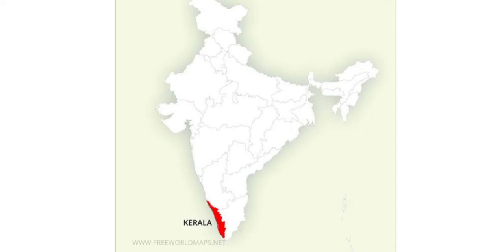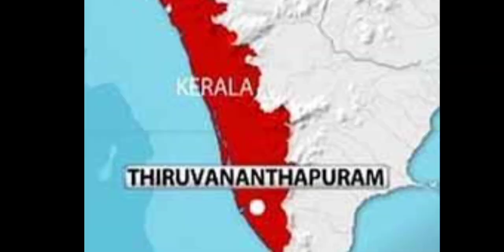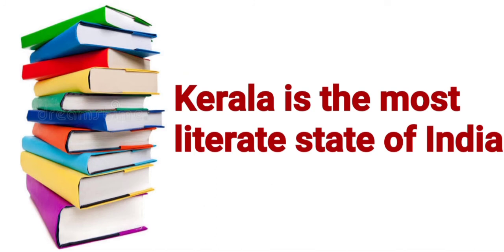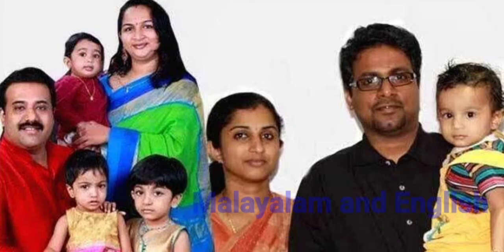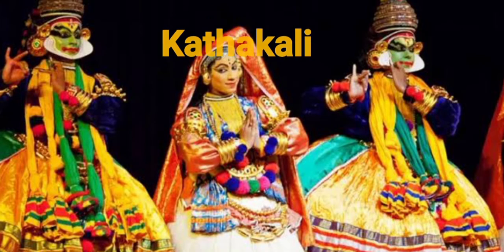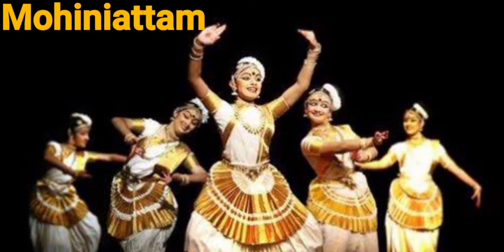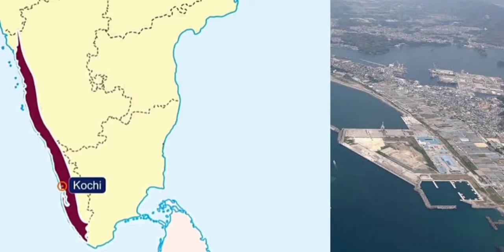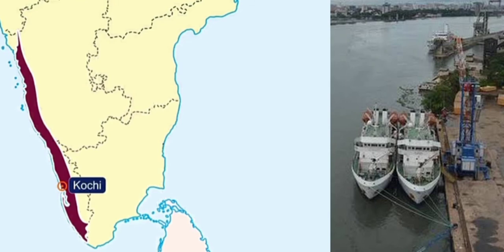Now we move towards Kerala. It lies in the extreme south of the Malabar coast. The capital city is Thiruvananthapuram. Kerala is the most literate state of India — almost everyone knows how to read and write. Malayalam and English are the main languages spoken by the people. Kathakali and Mohiniattam are the main classical dances. Onam is a popular festival, and snake boat races are held during Onam. Kochi is another natural harbour and is the most important port of the Malabar coast.